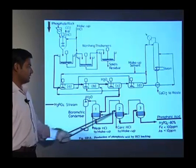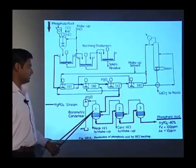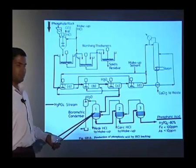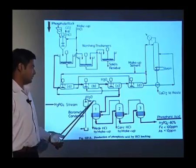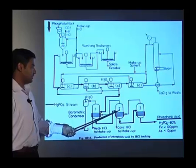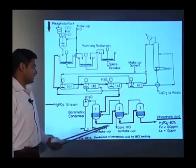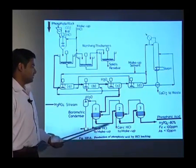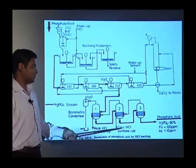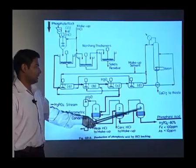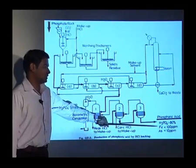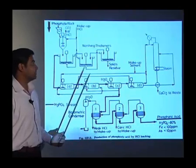Here we can see evaporators 1, 2, and 3. In the first one, the alcohol or solvent which we are using will be evaporated and then we can feed again to the reaction zone. In the second one, we will get the weak HCl for makeup. In the third evaporator, we get the concentrated HCl for makeup, and from the third we can have the phosphoric acid, which will have iron and arsenic content lower than 100 ppm.